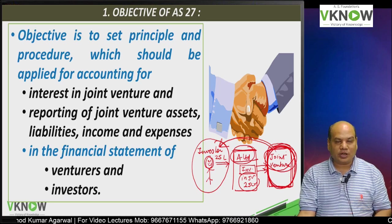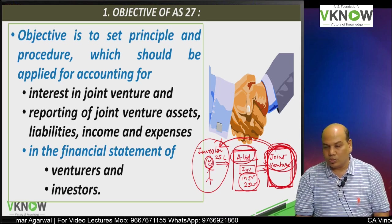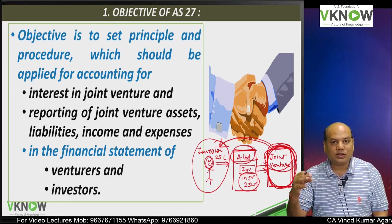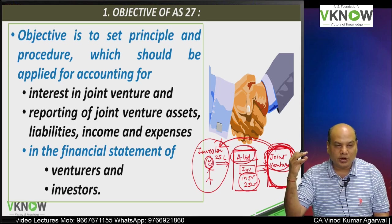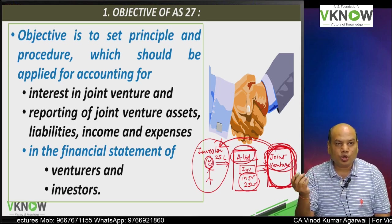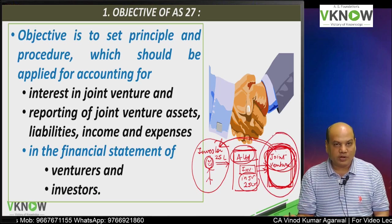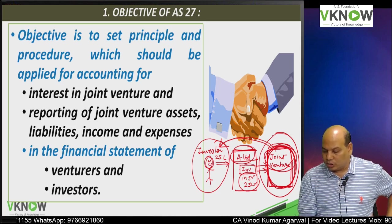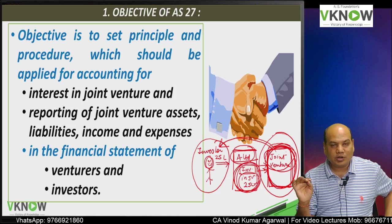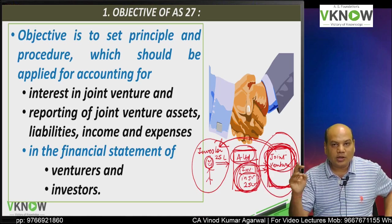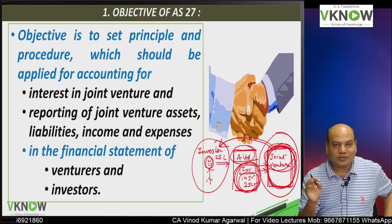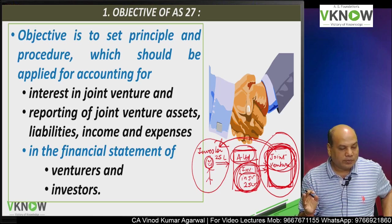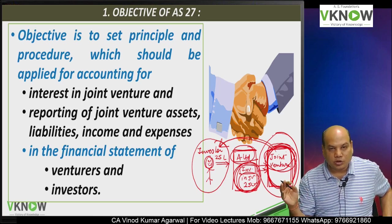If you think that the joint venture is not generating enough profits, you can ask the management of A Limited what was the need to put money in joint venture. The purpose of this standard, like AS 23, is to help you understand the performance of the other entity better because you will get more information about the working of the joint venture through this standard. In the absence of this standard, you can only see one line item — investment in joint venture in the balance sheet — and one line item in the P&L, that is dividend from joint venture. But now with AS 27, you will get a lot of information about joint venture.